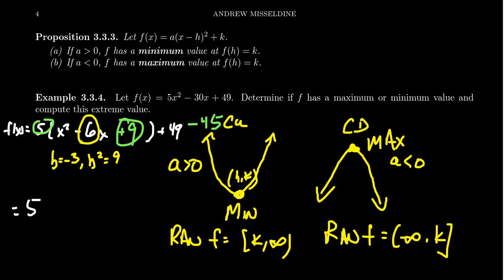So we end up with 5(x - 3)². We get 49 - 45, that's +4. And so what we see is that the vertex of this parabola is going to be (3, 4).